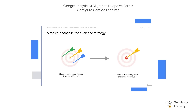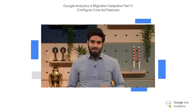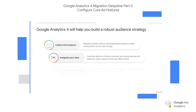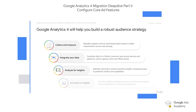And this is where GA4 comes to your rescue. GA4 can help you build a robust audience strategy. First, you can collect and measure — the event-based data model merges site and app data, helping you make better data-driven decisions with a deeper understanding of user behavior. You can also integrate your data from options like data import or measurement protocol to provide you with a holistic customer view. You can analyze for insights — Google Analytics 4 has machine learning embedded at its core, providing analysts with powerful insights and access to data. And lastly, you can activate on the insights through our platform integrations.